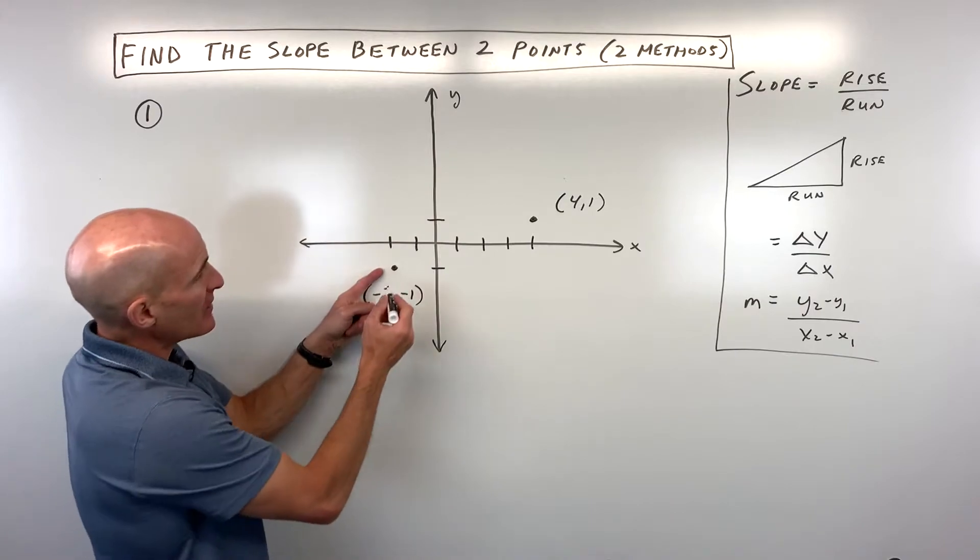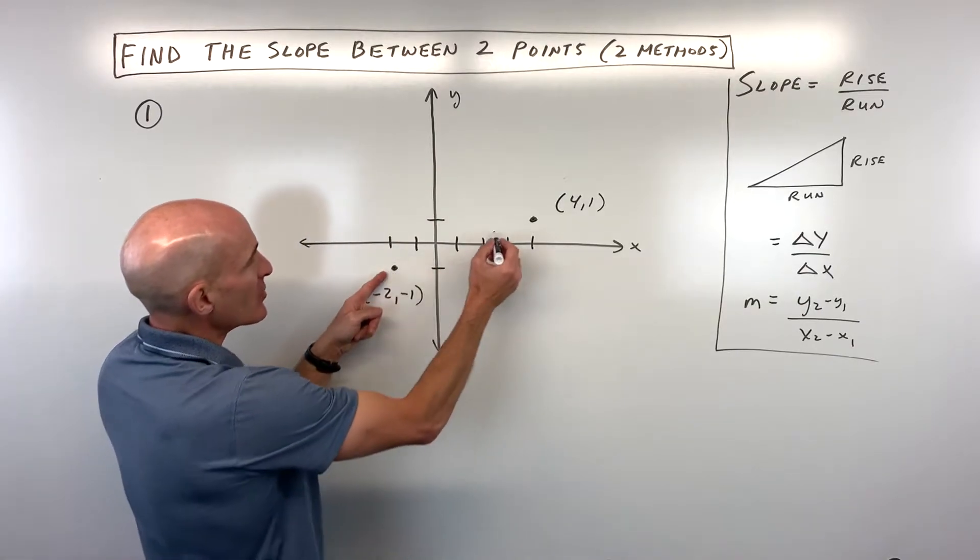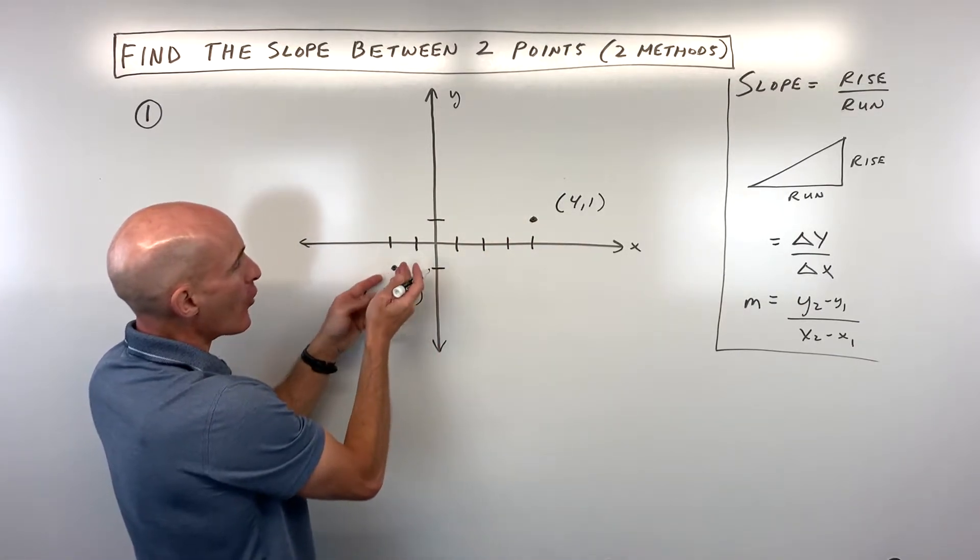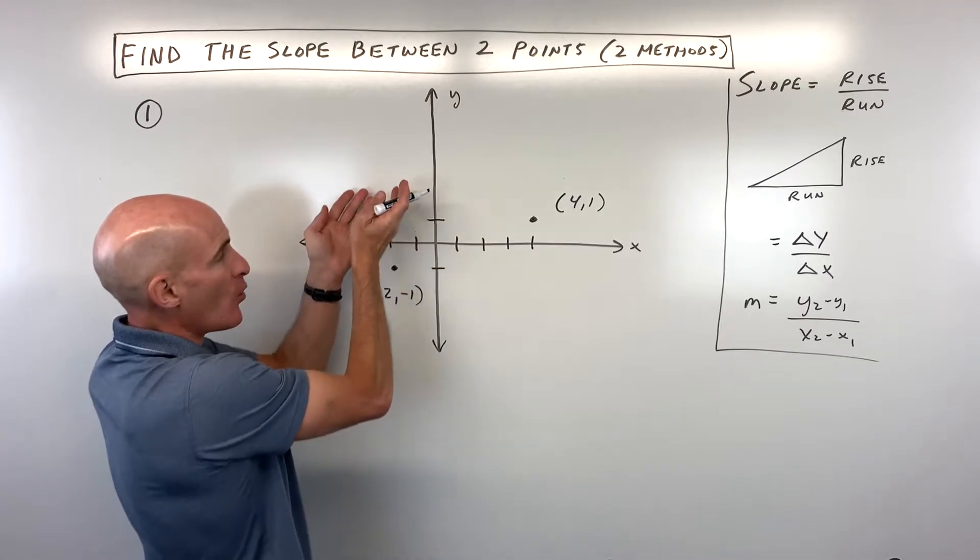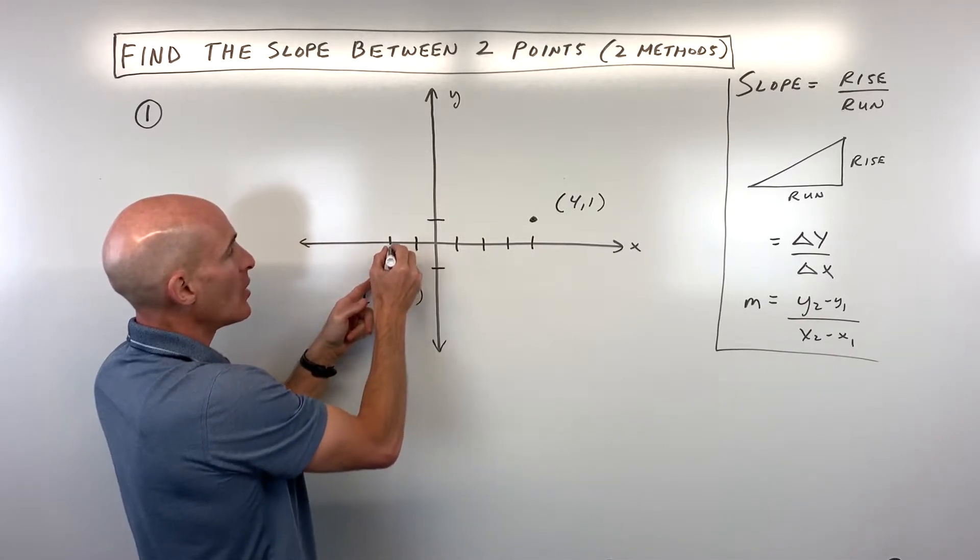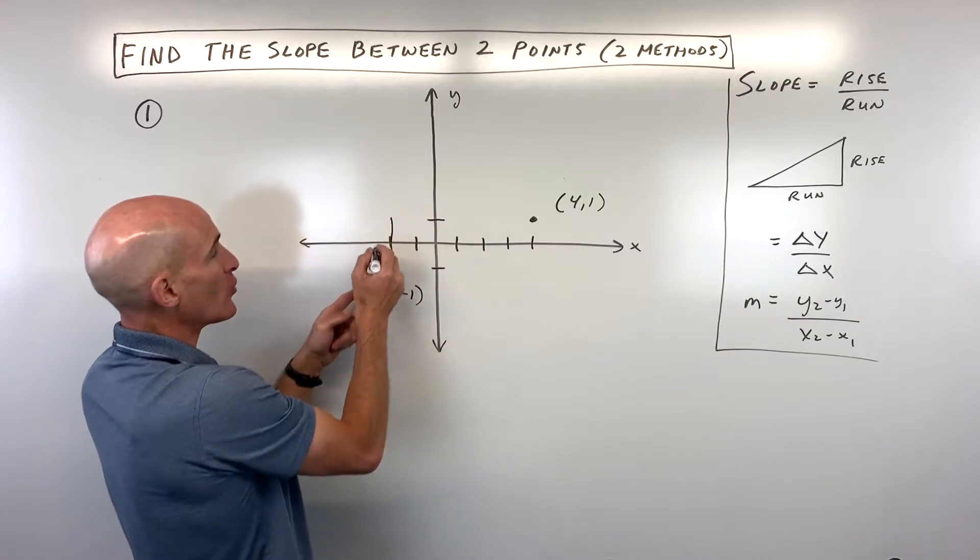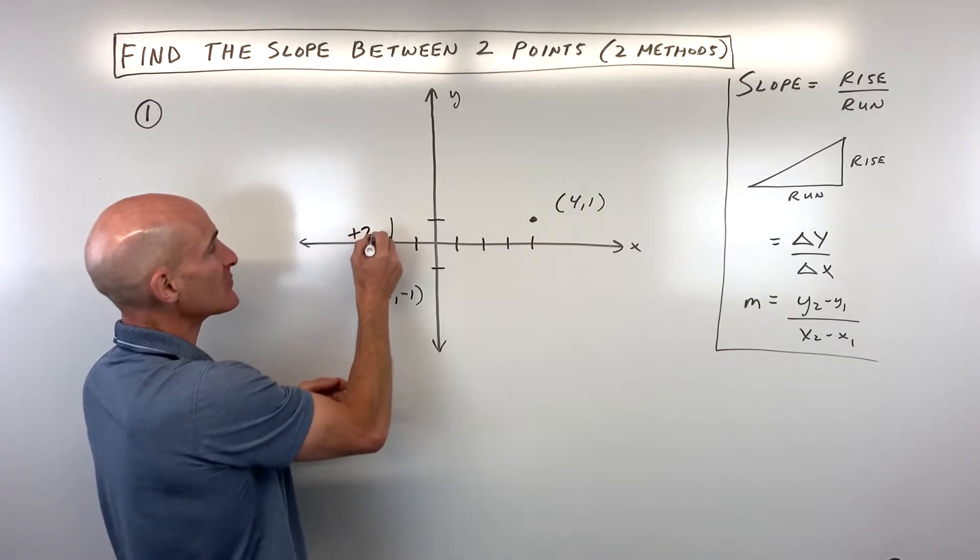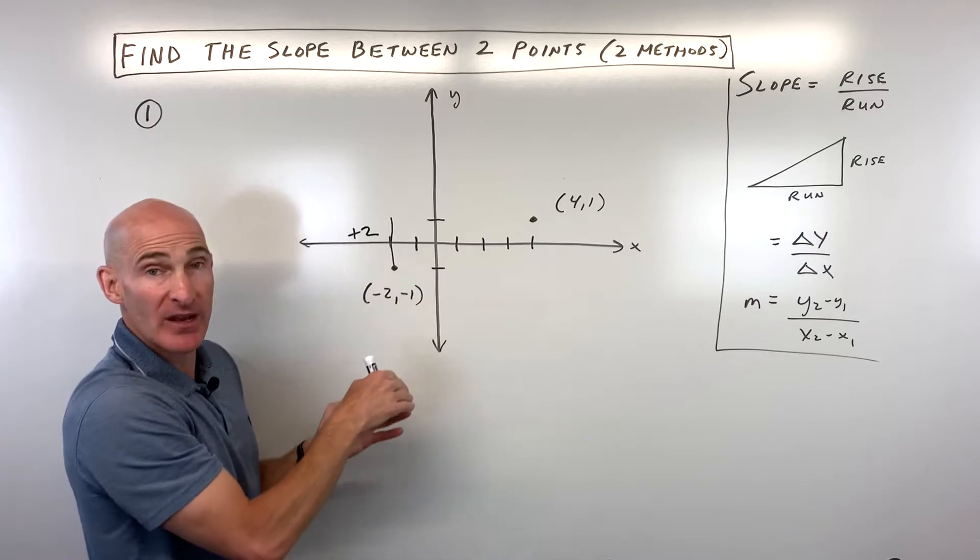What I could do is think of like if I was walking from here to here, I'd have to go a rise or a change in the y or a vertical direction. I have to actually go up 1, 2. Notice I'm going up, that's a positive 2. If I was going down that'd be a negative 2.